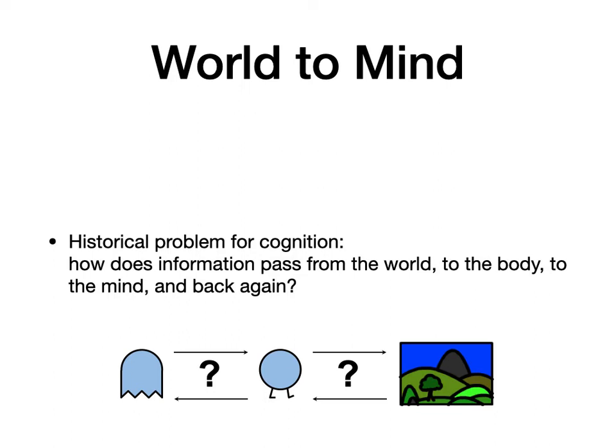First, there's a historical problem for cognition: how does information pass from the world to the body to the mind and then back again? If we think of the mind as this distinct, nebulous stuff — the strange experience of being a thinking thing — it's tough to figure out how the world's light and pieces come into our minds through the body. We know more about that now because of how neurons and receptors work, but things get more abstract the further into the brain they go.